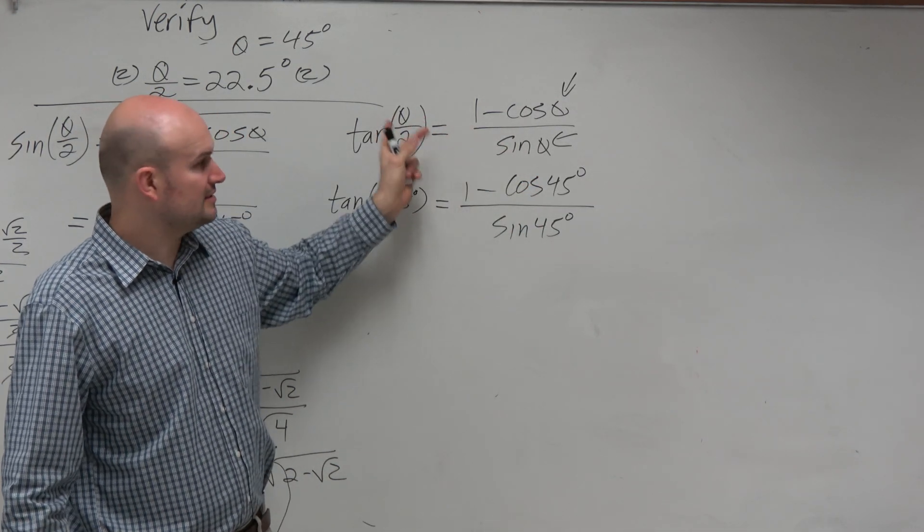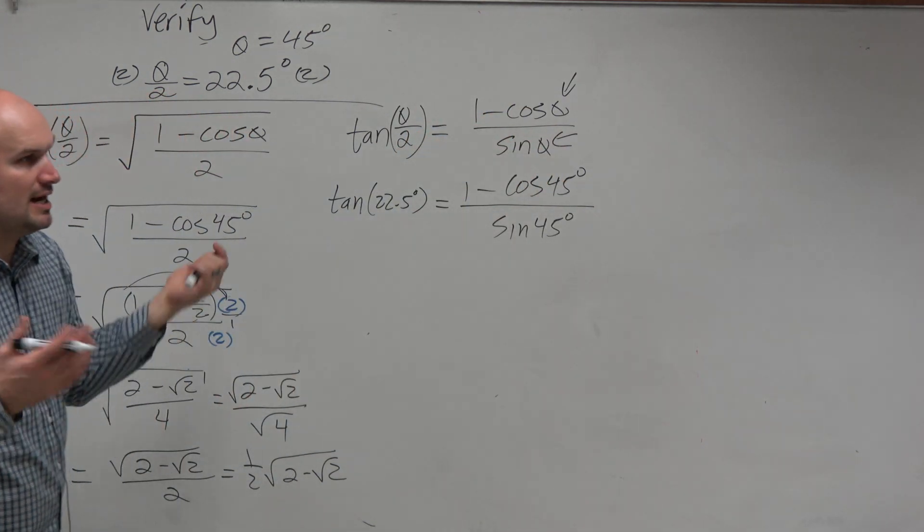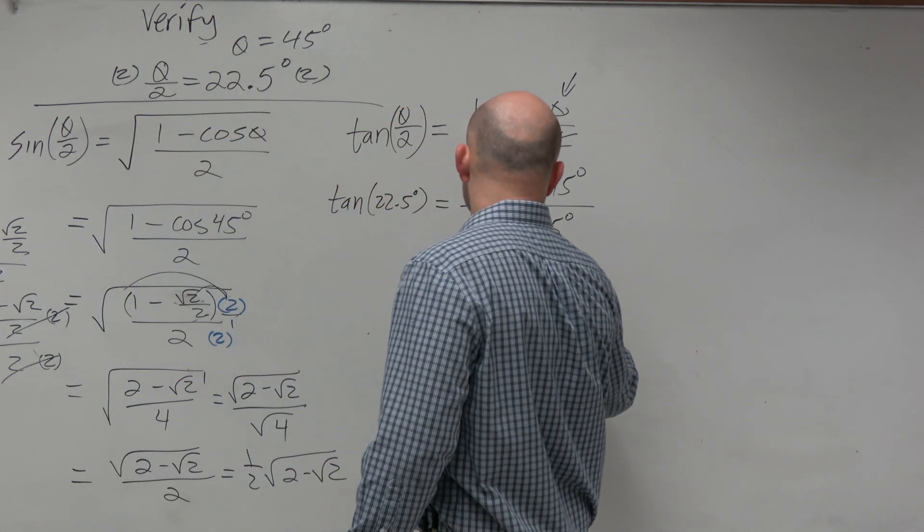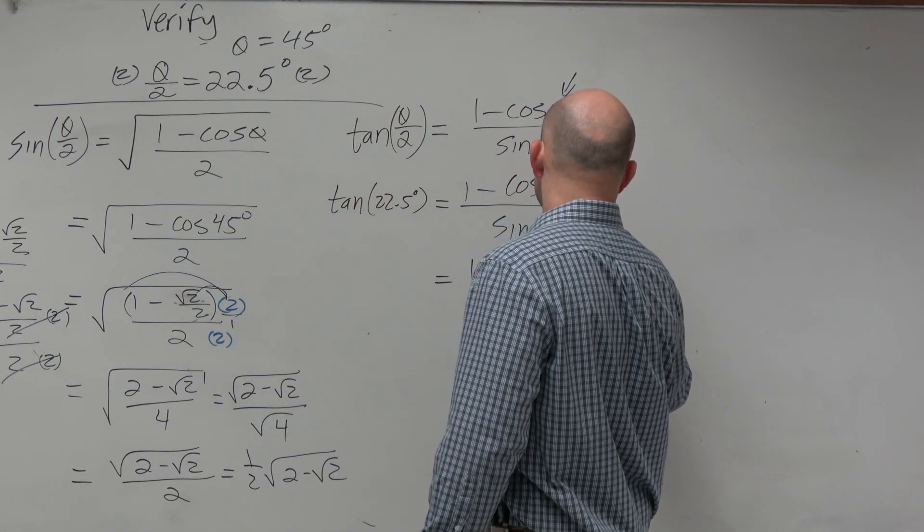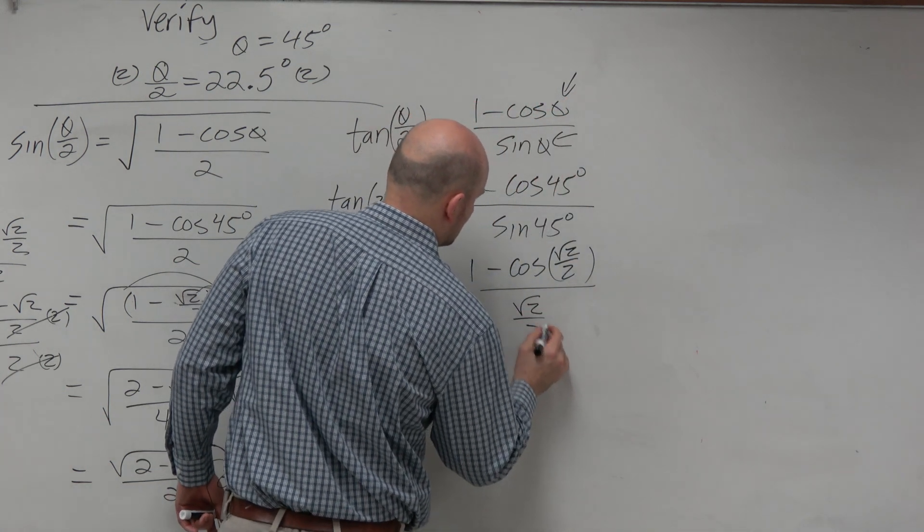You're doing the double, right? You've got to double it. This is theta over 2, that's theta. So now we just have some phi. Fortunately, we like this: square root of 2 over 2, all over square root of 2 over 2.